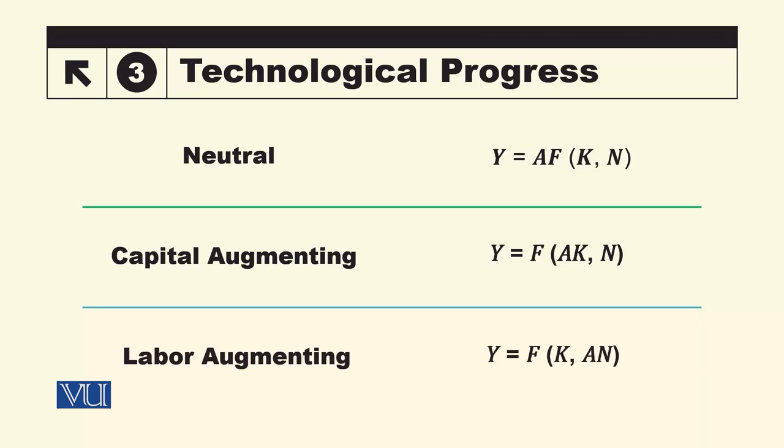The other form is labor augmenting. In this pattern, we multiply technology A with N. If there is any improvement in technology, it will only improve the marginal product of labor. Capital will not be affected. These are three different types of technology that we can introduce: neutral, capital augmenting, and labor augmenting.